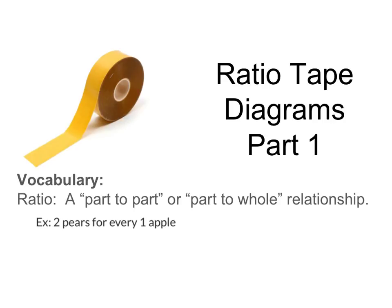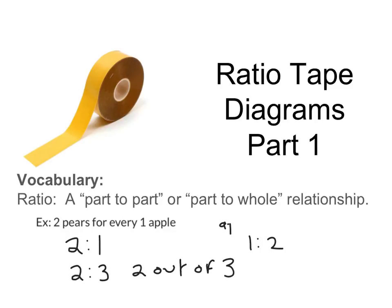We could write that ratio lots of different ways. We could write it as a part-to-part: two to one, meaning two pears to every one apple. We could also write it as two to three, meaning two out of every three pieces of fruit are pears. Or we could say one to two if we wanted to say apples to pears.